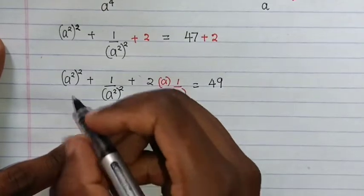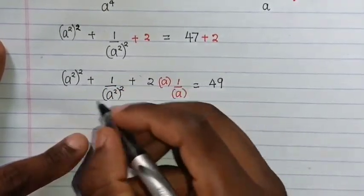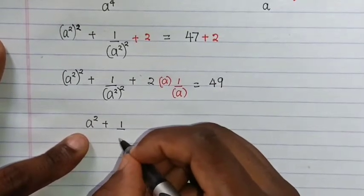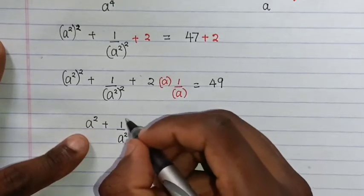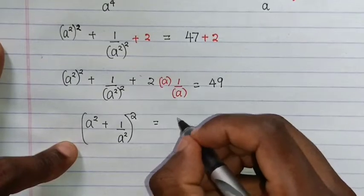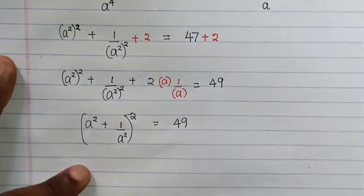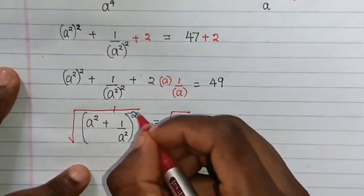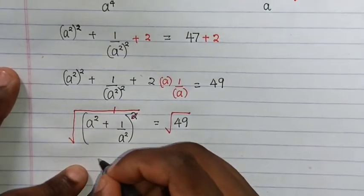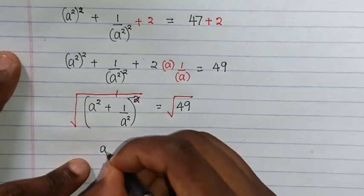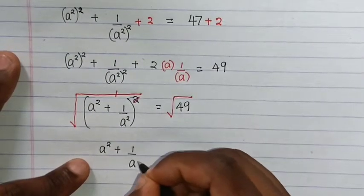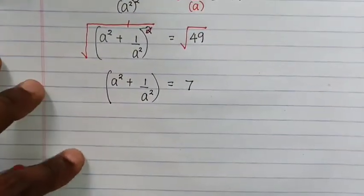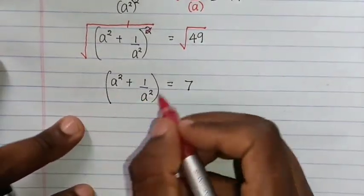This whole equation is the same as when you factorize — it is the same as a squared plus one over a squared, all inside a square, equals 49. Then we find the square root of this side, and this one is the same as a plus one over a squared equals 7.